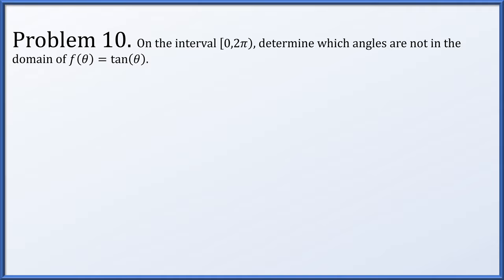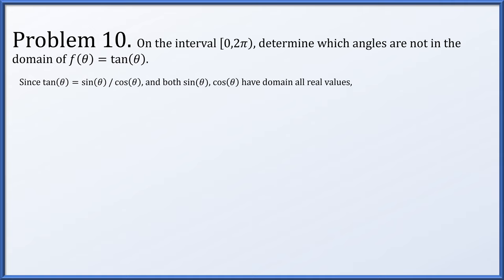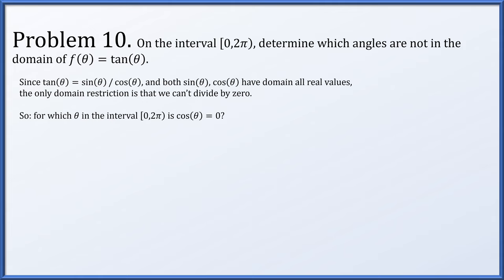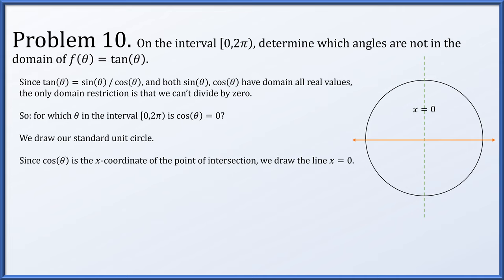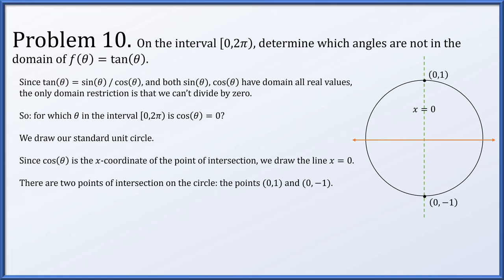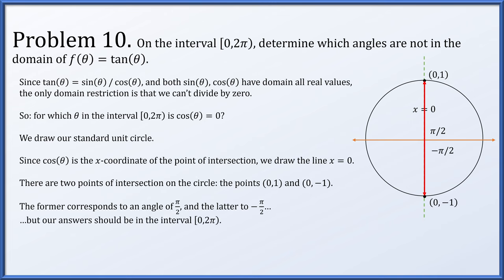Problem 10: On the interval from 0 to 2π, find which angles are not in the domain of tan(θ). Since tan(θ) = sin(θ)/cos(θ), the only restriction is that we can't divide by 0, so we need cos(θ) = 0. Drawing the unit circle, cos(θ) is the x-coordinate of the point of intersection. The line x = 0 intersects the unit circle at (0,1) and (0,-1), corresponding to angles π/2 and -π/2. Since we need answers in [0, 2π], we replace -π/2 with the coterminal angle 3π/2. So the angles not in the domain are π/2 and 3π/2.